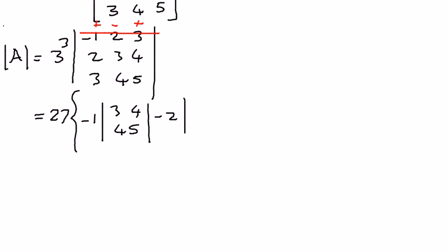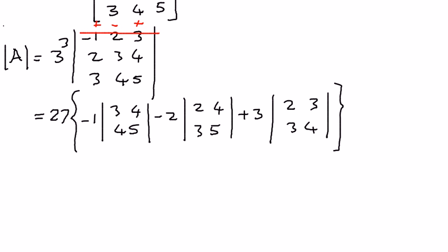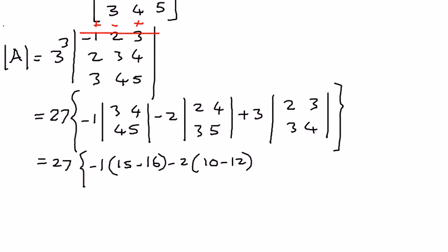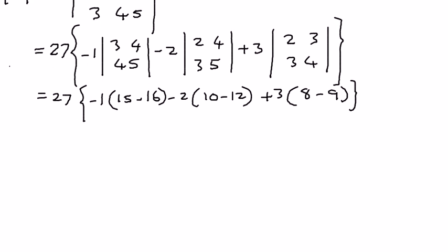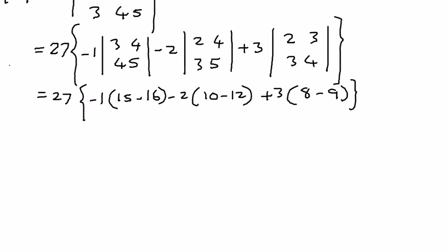Using that sign convention, we write: negative 1 times the minor (3, 4; 4, 5), minus 2 times the minor (2, 4; 3, 5), plus 3 times the minor (2, 3; 3, 4). Expanding: negative 1 times (3×5 − 4×4) gives negative 1 times (15 − 16); minus 2 times (2×5 − 3×4) gives minus 2 times (10 − 12); plus 3 times (2×4 − 3×3) gives plus 3 times (8 − 9).